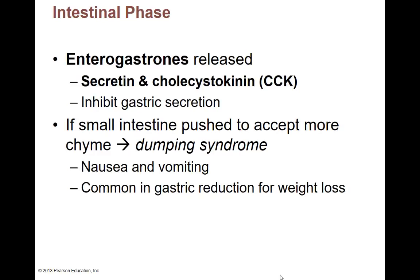There are other additional hormones that can be released by your small intestine: secretin and cholecystokinin. We'll get more into them next time. Their main job is to inhibit gastrin secretion — to inhibit the making of gastric juices. If the small intestine is pushed to accept more food even though we tried to close off the sphincter and reduce acid production, but the stomach forces food into the small intestine, that's called dumping syndrome.